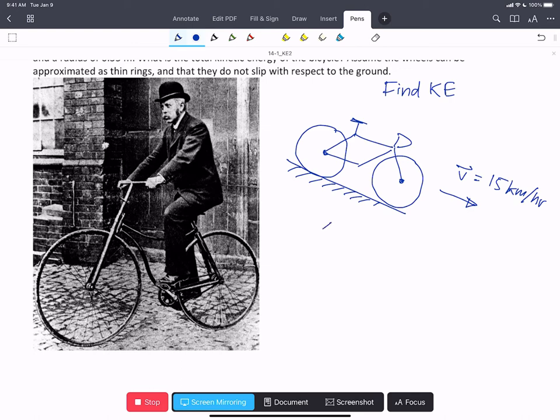The frame, shown here, that attaches to the wheels, has a linear velocity V equal to 15 kilometers per hour. And if we convert that, that's 4.17 meters per second.